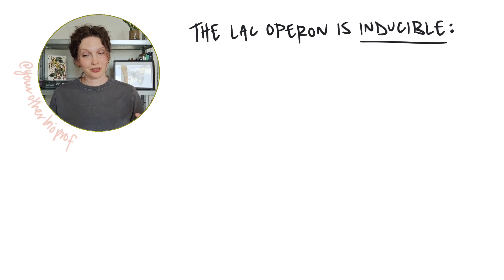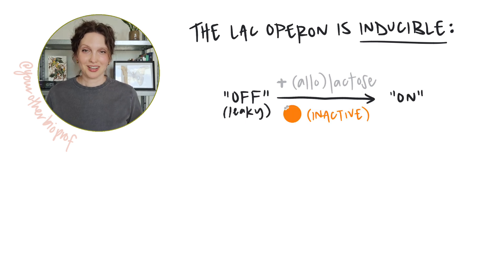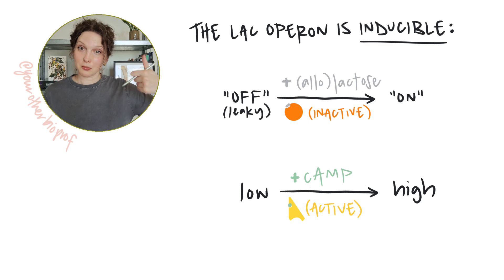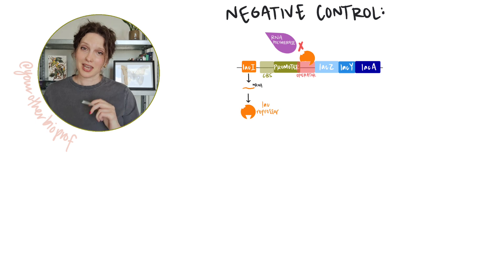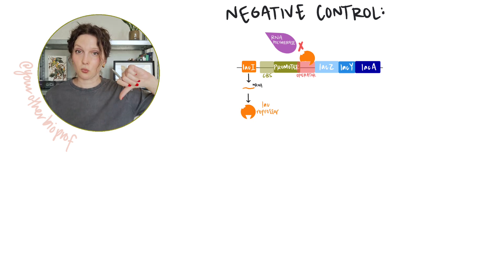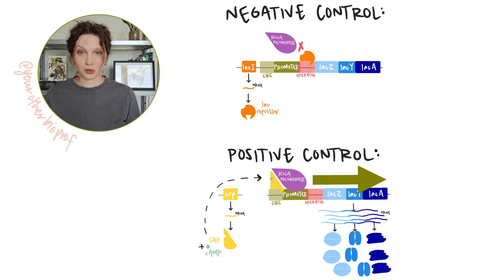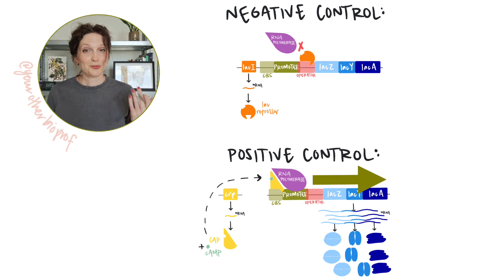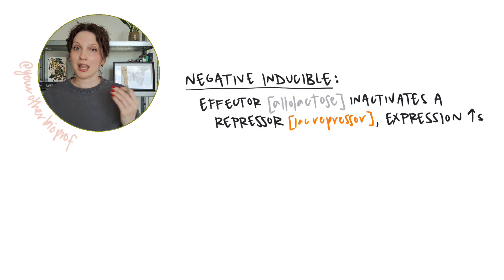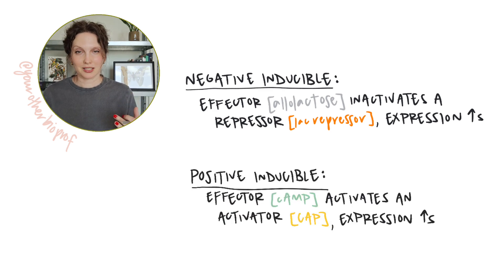The lac operon is inducible. Binding of allolactose to the lac repressor induces transcription and binding of cyclic AMP to CAP ramps up transcription even more. And the lac operon is under both negative and positive control. Negative control through a regulatory protein, the lac repressor binding the lac operon and having a negative impact on expression, repressing it and positive through a regulatory protein, CAP binding the lac operon and having a positive impact on expression levels.